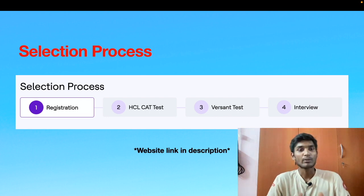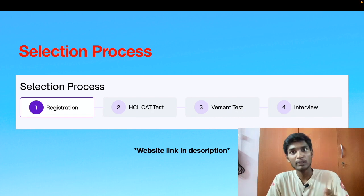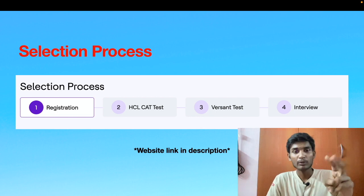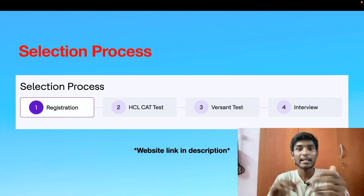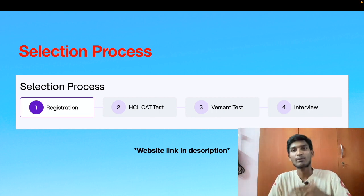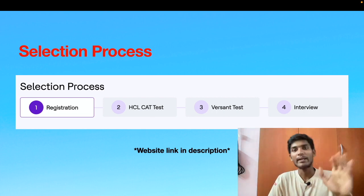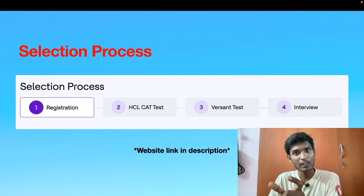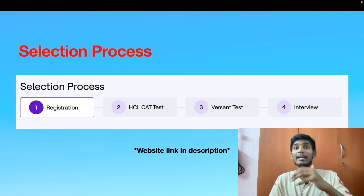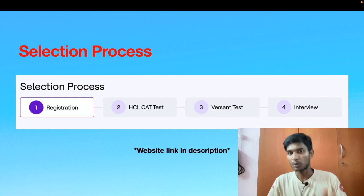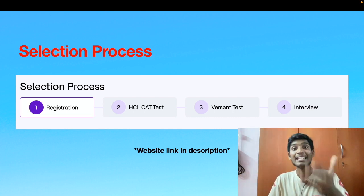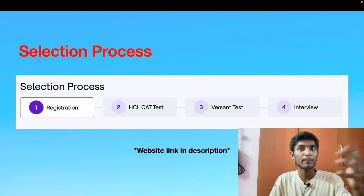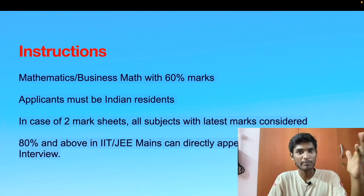The selection process consists of four steps. The first step is registration, done through their official website — the link is in my description. The second step is the HCL CAT test, an entrance examination. The third is the Versant test, which is a higher level of entrance examination. The fourth is an interview — a formal meeting where they check your communication skills and more. Once you complete all four stages you are eligible to enter the TechBee program.